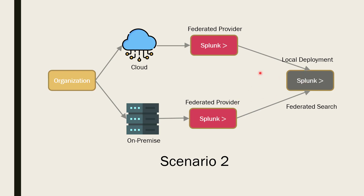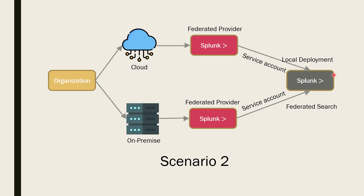The local deployment gathers data from all the federated providers, aggregates it, and sends the result back to the user via the search head. The two instances communicate using a service account — you need to create a service account in your federated provider. Through that service account you can control security-related details, such as which indexes the federated search will have access to. You can also create user-level access controls defining which indexes a user can access.